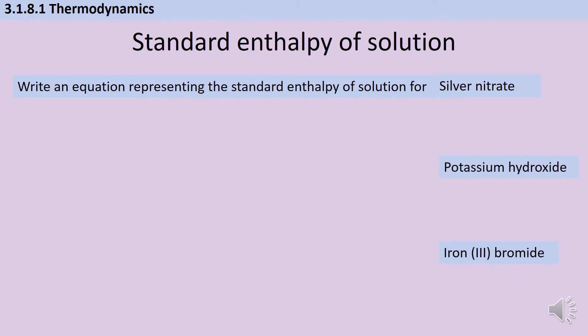To answer this question you need to be confident in identifying the symbol formula for each compound. Silver nitrate will be AgNO3, potassium hydroxide will be KOH, and iron(III) bromide will be FeBr3. Once we know that, we can take one mole of each solute and split it apart into its hydrated ions.